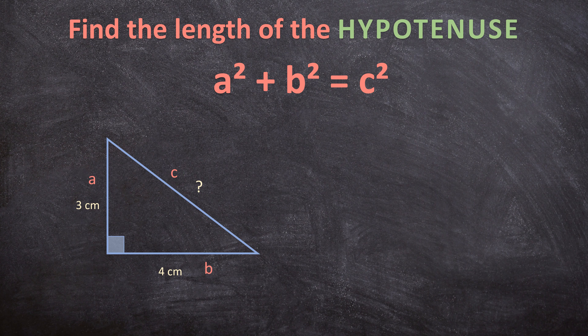You can switch the other two sides around as long as C is always your hypotenuse. Now let's write down the formula: A squared plus B squared is equal to C squared. We have the values for A and B, so we insert them in the right places: 3 squared plus 4 squared equals C squared.